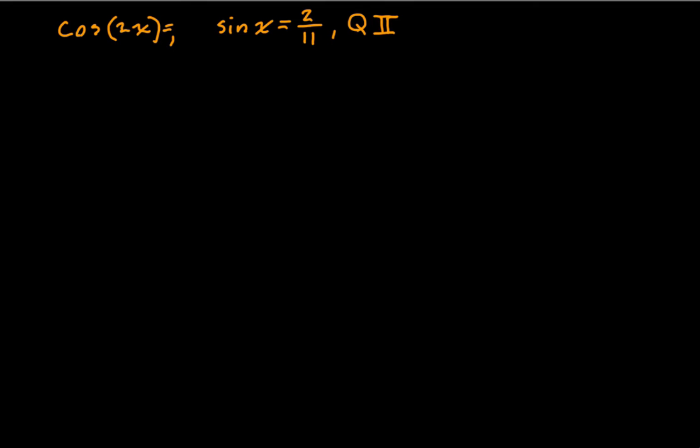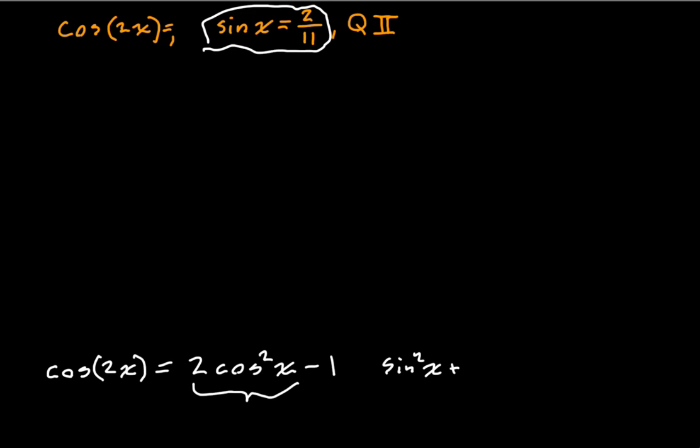So let's pull up our double angle identity that we learned for cosine of 2 times some angle. We learned that the cosine of 2x is equal to 2 cosine squared of x minus 1. So if we find cosine of x here and square it, we should easily be able to solve for what the cosine of 2x is. But notice we only have sine of x.